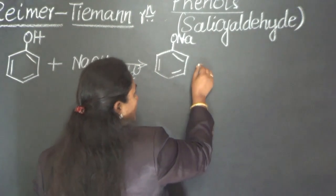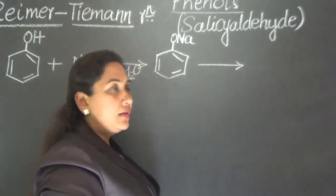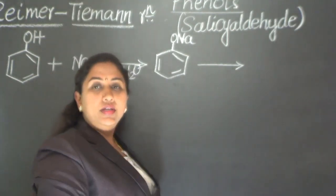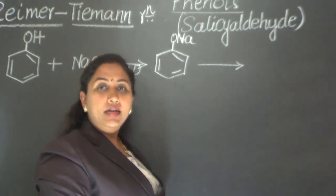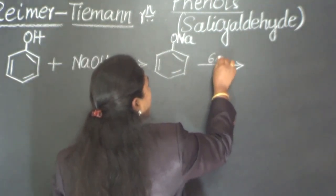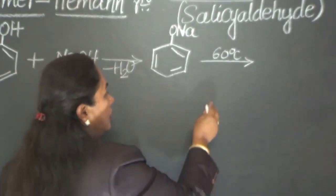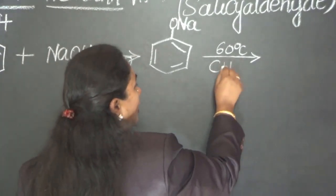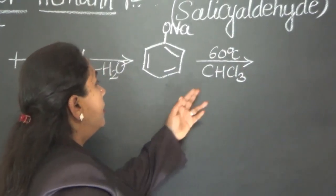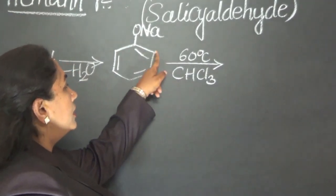Sodium phenate is our starting material now. It is treated with a solution of sodium hydroxide and chloroform at about 60 degrees Celsius. Initially, chloroform having molecular formula CHCl3 will come in contact with sodium phenate, and they try to take attachment at the ortho position.